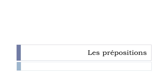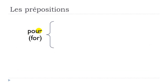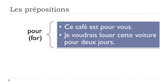Les prépositions. We've seen à, de, and en. Now let's see other main French prepositions. Pour means 'for': Ce café est pour vous (this coffee is for you). Je voudrais louer cette voiture pour deux jours — I would like to rent this car for two days. Sans means 'without': Elle voyage sans ses valises (she travels without her luggage). Il vient sans son chien (he comes without his dog).